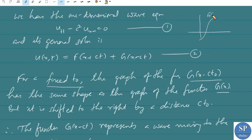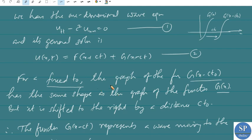That is, if the graph of g(x) is given, then the graph of g(x-ct₀) — where t₀ is fixed, so ct₀ is also a fixed quantity — is the same shape as g(x) but shifted to the right by the length ct₀. So this is the graph of g(x) and this is the graph of g(x-ct₀).